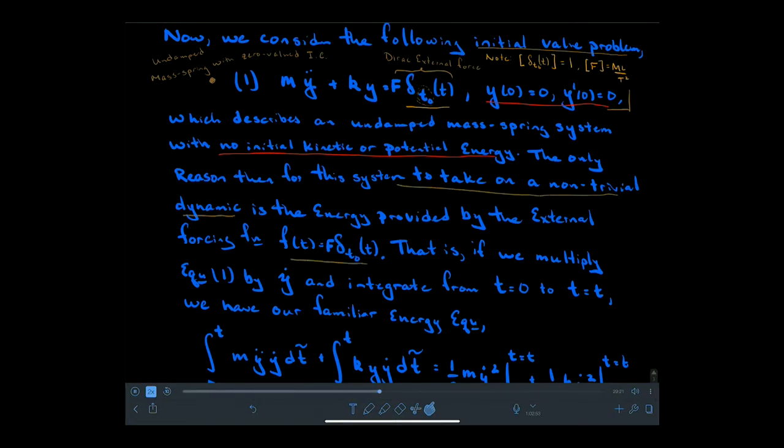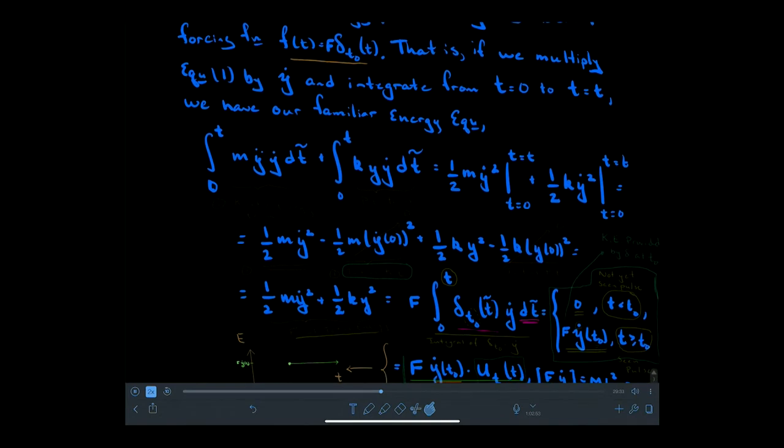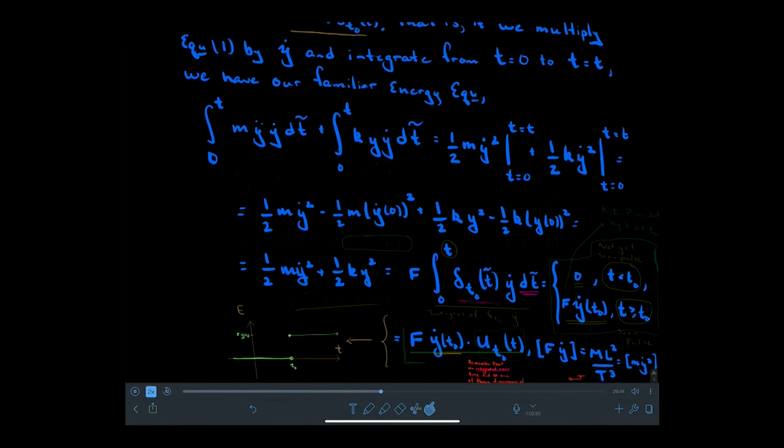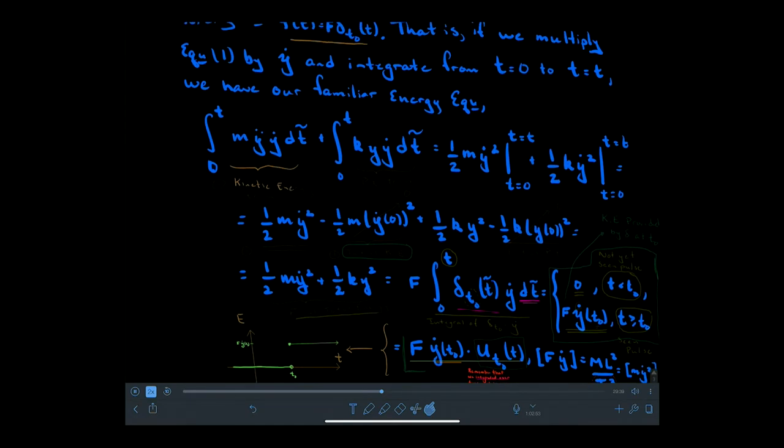When we derive the energy equation associated with equation one, the mass spring system, the simple harmonic oscillator version, we multiply through by y prime (in this case we'll use y dot) and then integrate it over time. If we perform that here, the acceleration term gets integrated out to being one-half mass times velocity squared, so there's my kinetic energy term. At the upper bound t is arbitrary. At the lower bound we have the initial kinetic energy, but that's been initialized to zero, so there's no initial kinetic energy.